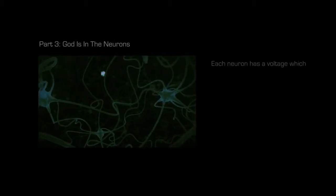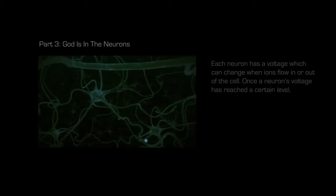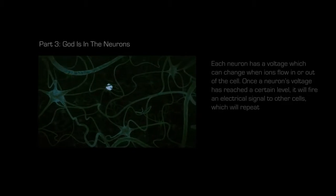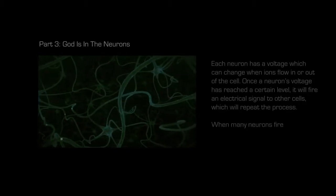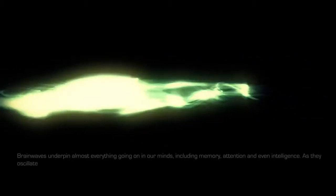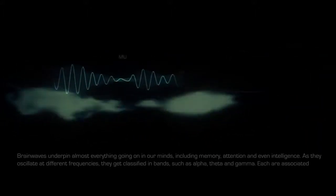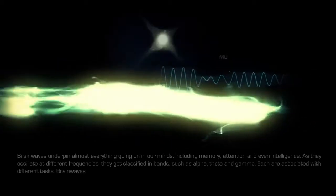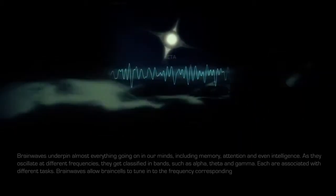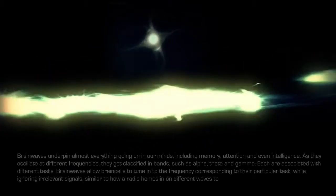Each neuron has a voltage, which can change when ions flow in or out of the cell. Once a neuron's voltage has reached a certain level, it will fire an electrical signal to other cells, which will repeat the process. When many neurons fire at the same time, we can measure these changes in the form of a wave. Brain waves underpin almost everything going on in our minds, including memory, attention, and even intelligence. As they oscillate at different frequencies, they get classified in bands such as alpha, theta, and gamma. Each are associated with different tasks. Brain waves allow brain cells to tune into the frequency corresponding to their particular task while ignoring irrelevant signals, similar to how a radio homes in on different waves to pick up radio stations.